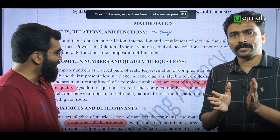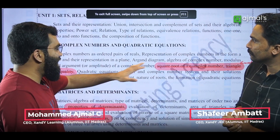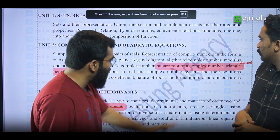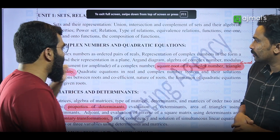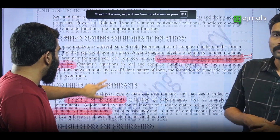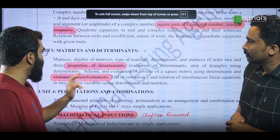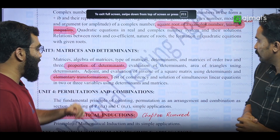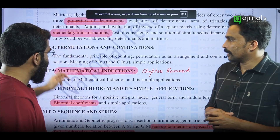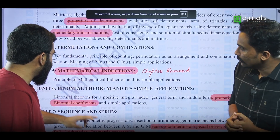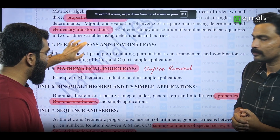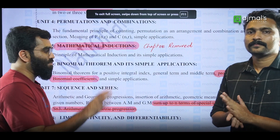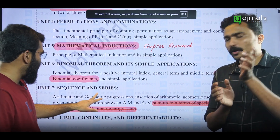There is no matter where the whole chapters are removed. There are a few topics that have been asked about. The square root of a complex number and triangle inequality — this is a complex number and quadratic equation topic. It is called properties of determinants, elementary transformation. Let's say math and diction — it is called properties of binomial coefficients.